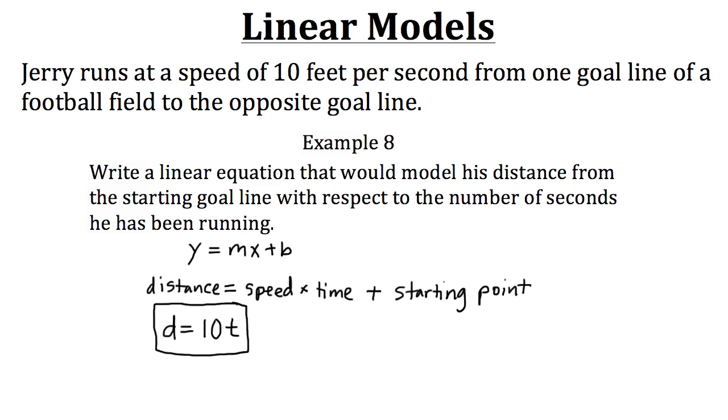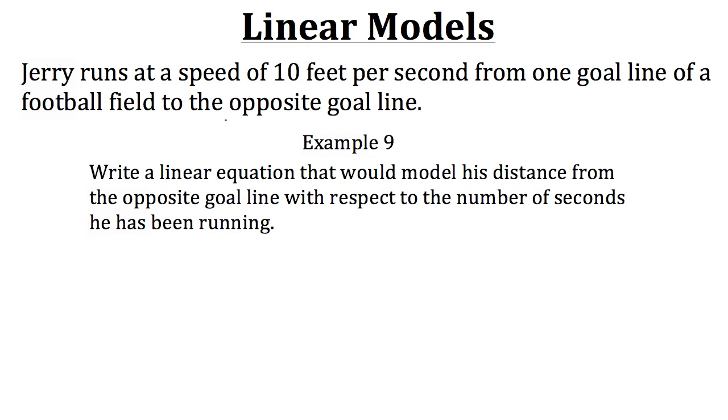So Jerry's distance is going to equal his speed of 10 feet per second times the amount of seconds that he's running. Now let's take a look at one more example in regards to this concept. So for this one, we still have Jerry running at a speed of 10 feet per second from one goal line to the opposite goal line of a football field. But when we're modeling it with the linear equation, this time we want to model his distance from the opposite goal line. So rather than starting from the first goal line that he's at, we want to measure the distance that he is from the opposite goal line. Now with a football field, from one goal line to another is 100 yards. Now since there's 3 feet in one yard, we know that there's 300 feet in the football field.